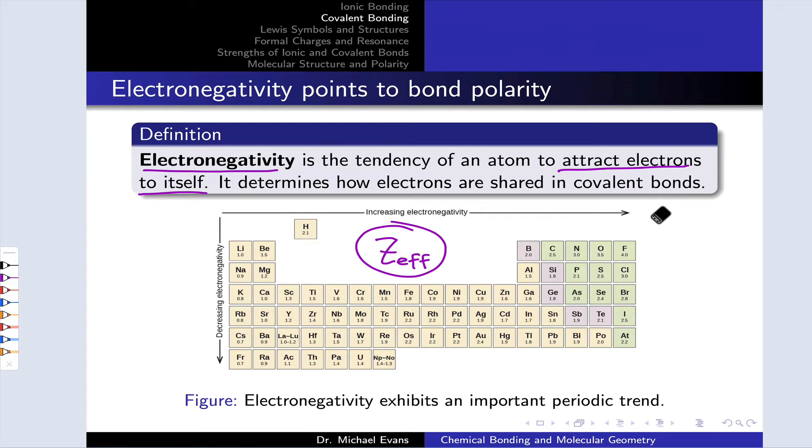Electronegativity tends to increase as we move to the right on the periodic table, as effective nuclear charge increases. And electronegativity decreases as we move down the periodic table, as that effective nuclear charge diminishes as our valence shell gets farther from the nucleus. This is a critical periodic trend, and one that you'll need to be familiar with if you plan to take organic chemistry and really in any chemistry course you will take.